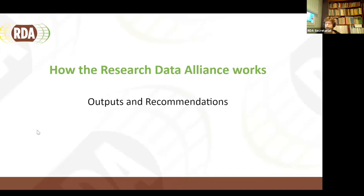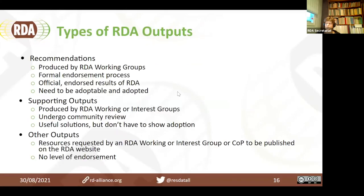There are three broad types of RDA outputs: recommendations, supporting outputs, and other. Outputs can be pretty much anything — any resource a group requests to be published on the RDA website — and there is no level of endorsement required. Recommendations are produced by working groups and undergo a formal endorsement process. They represent the official results of RDA, and they need to demonstrate that they are adoptable and have been adopted. Supporting outputs are produced by working or interest groups, undergo a community review, and are useful solutions but do not have to show adoption.